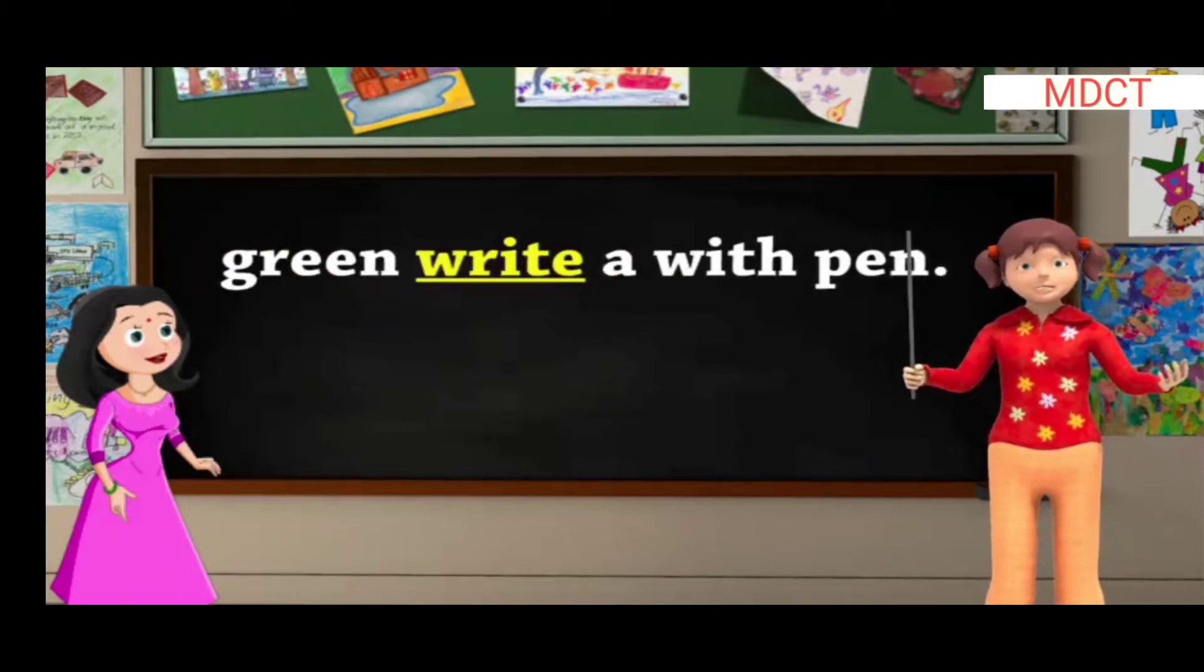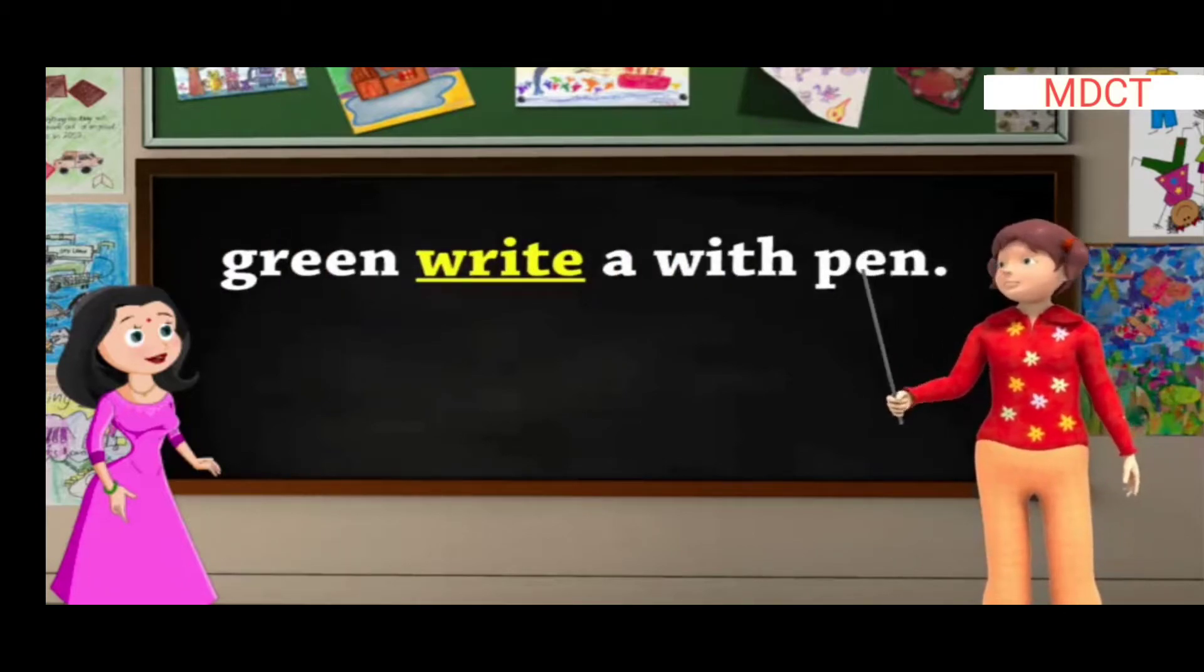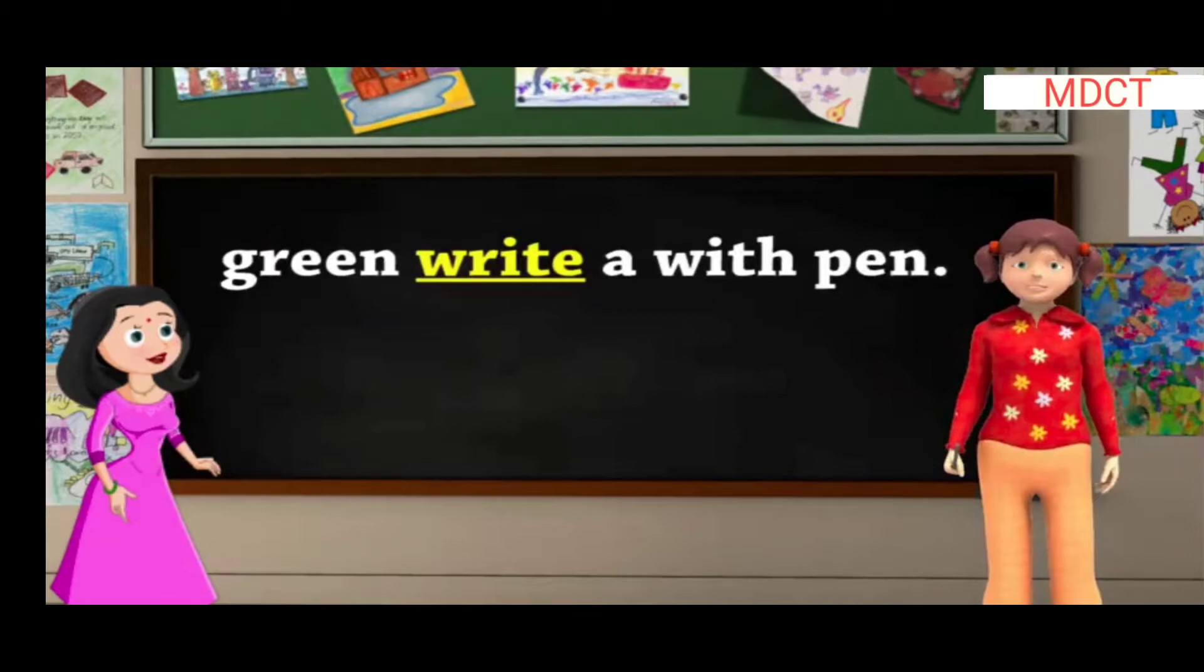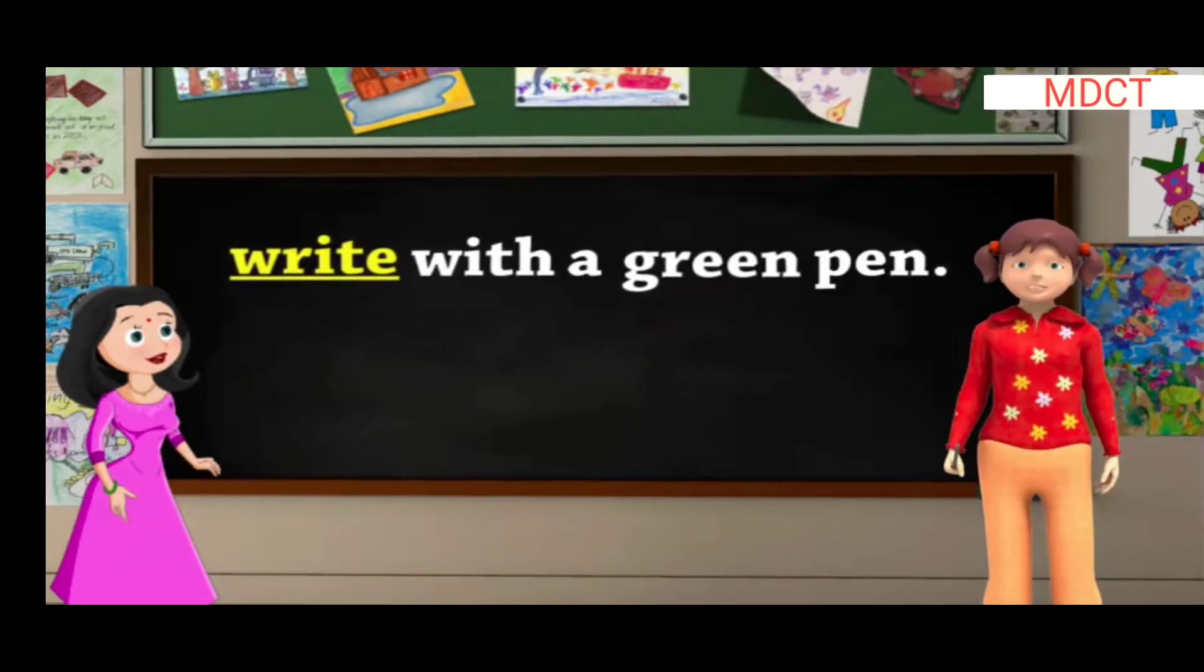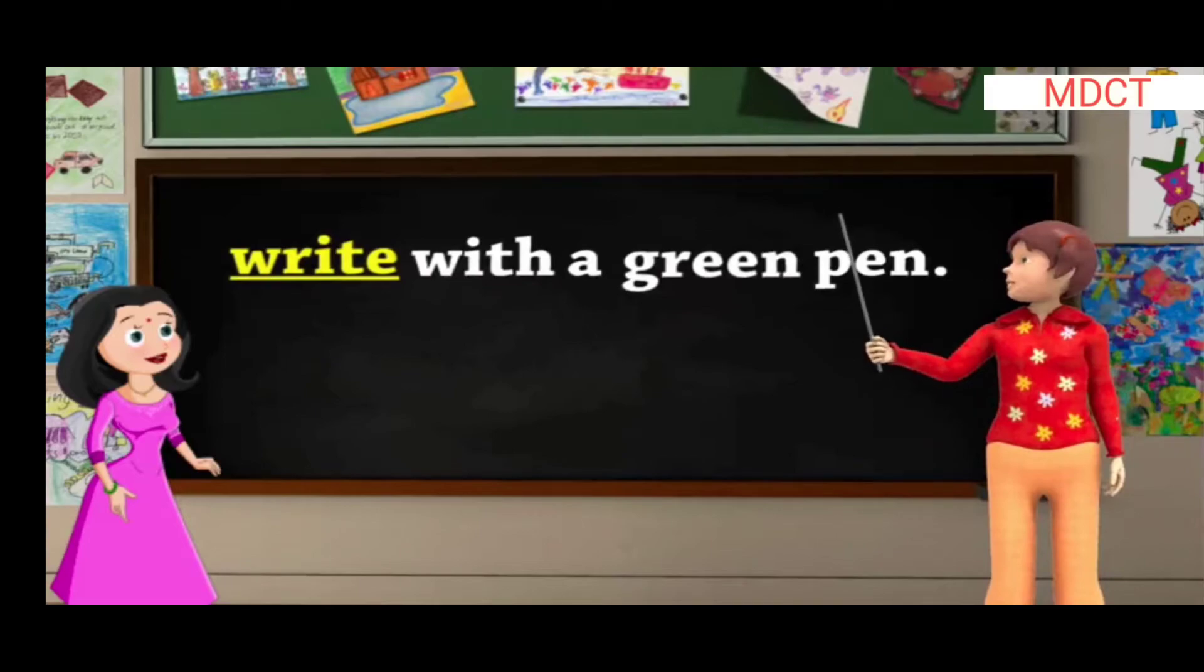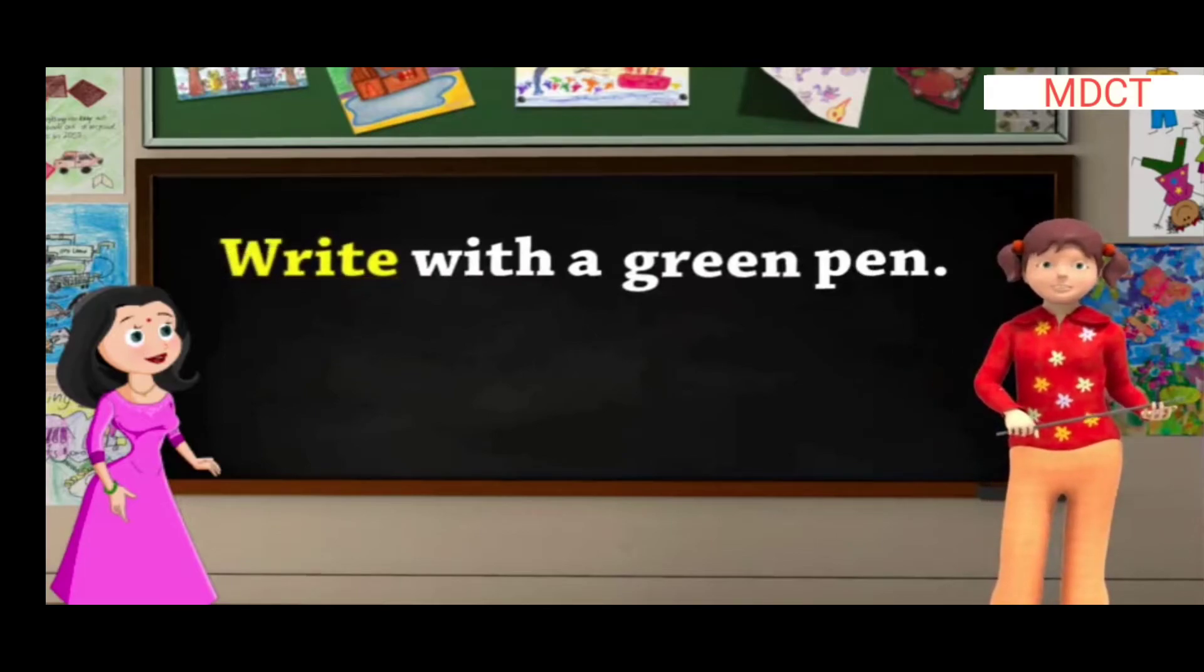Green, right, of, with, pen. The sentence will be: Write with a green pen. Children, since the sentence begins with 'write', W will be capital.